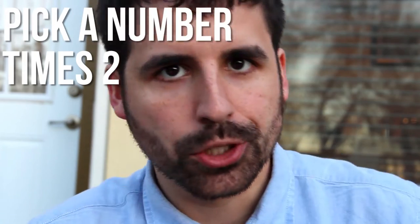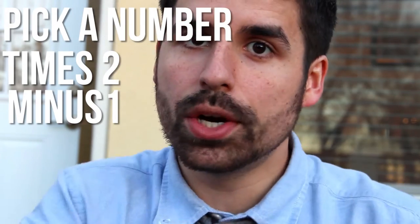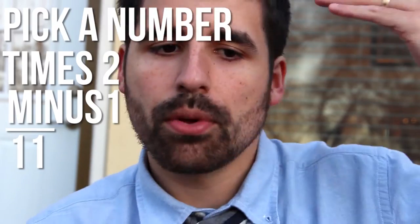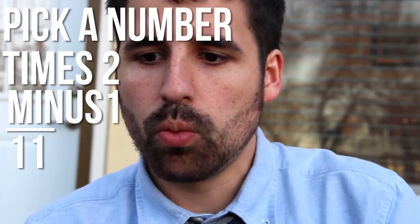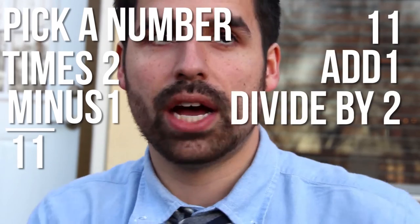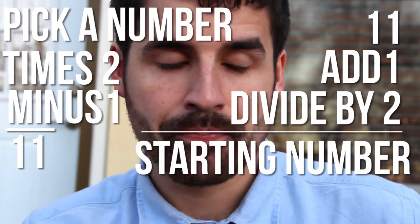If I tell you to pick a number, multiply by two, and then subtract one, and then say what is your final number, and you said 11, students know to intuitively reverse that process. They say okay, if you multiplied it by two and then subtracted one, that means to get back to where I started I'm gonna have to add one and then divide by two. I gotta undo what I did. So that's the general premise.